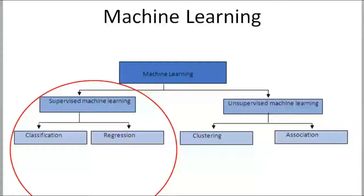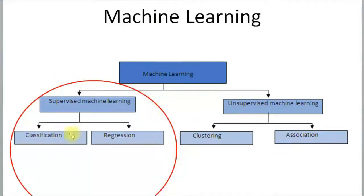Before we start predictive modeling, let's learn some concepts. Machine learning is divided into mainly two categories: supervised learning and unsupervised learning. There's a third one called reinforcement learning that we'll cover later. Under supervised learning, we have classification problems and regression problems.